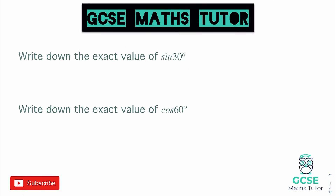Starting off this video with something relatively nice and easy. If you are doing the higher paper then there are more exact values that you need to know, and I'll link that in the description. But no matter which paper you're doing, these two values are absolutely essential and they're really easy to remember. Sine 30 is one half and cos 60 is one half. If you are doing the foundation paper, just make sure you write down the value one half. For the higher paper, other values are covered in the linked video.